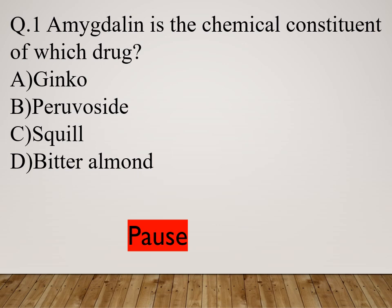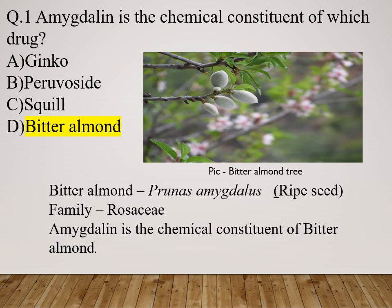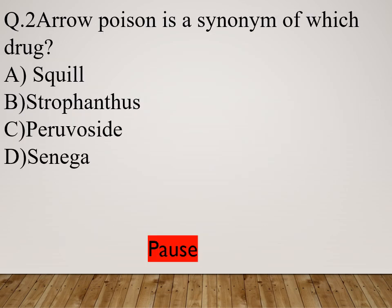Question 1: Amygdalin is the chemical constituent of which drug? Option A: Ginkgo. Option B: Peruvocyte. Option C: Squill. Option D: Bitter almond. The right answer is bitter almond. The scientific name of bitter almond is Prunus amygdalus and the family is Rosaceae. Amygdalin is the chemical constituent of bitter almond.